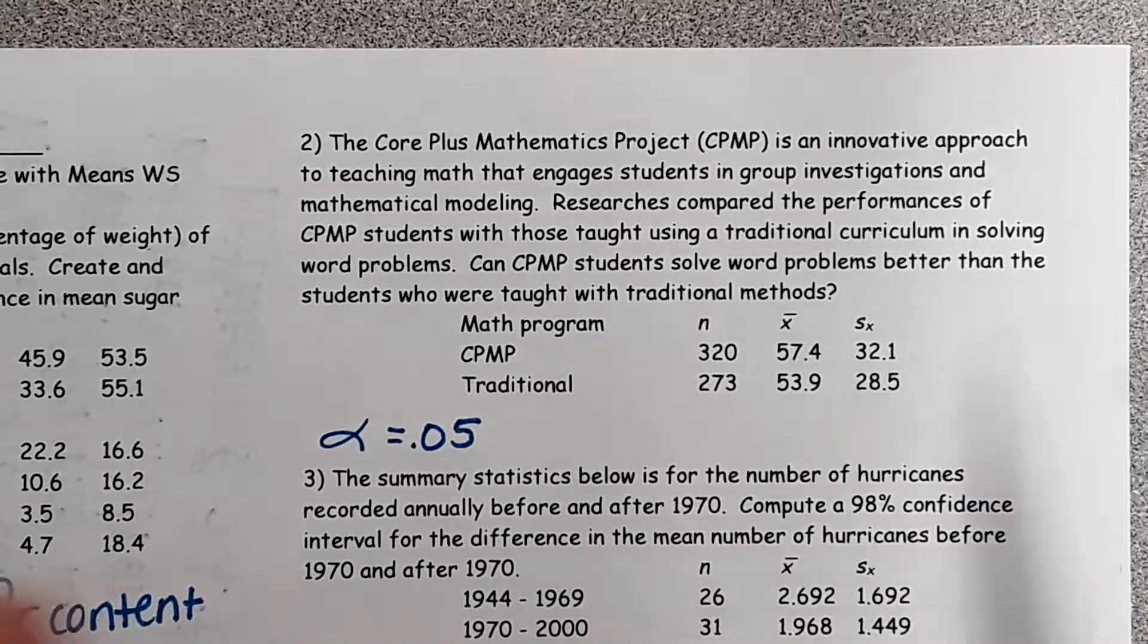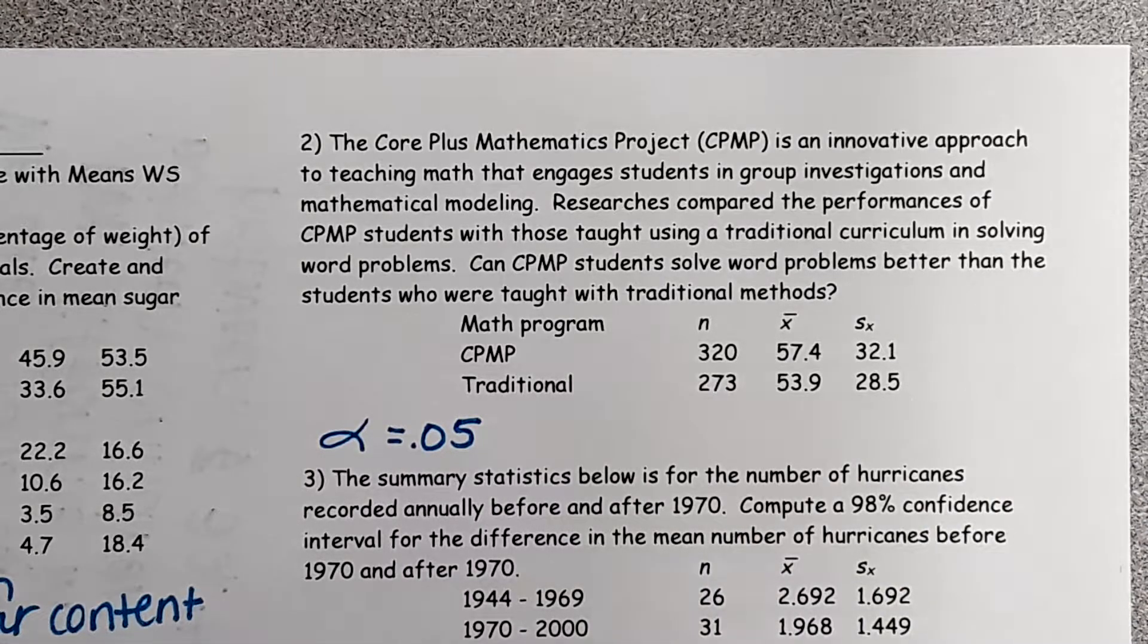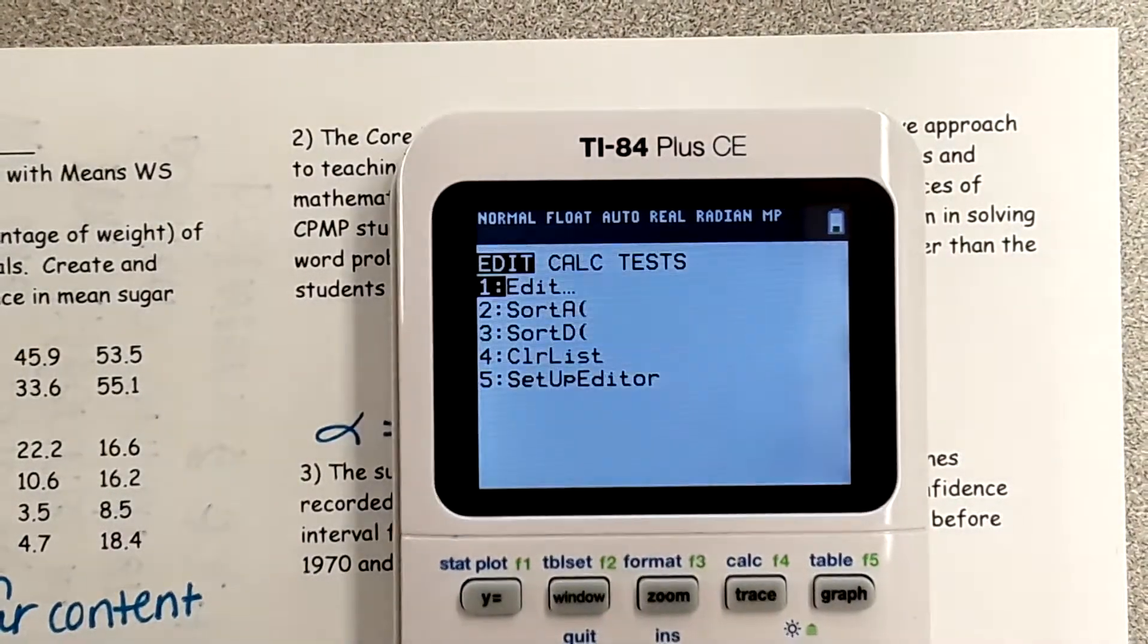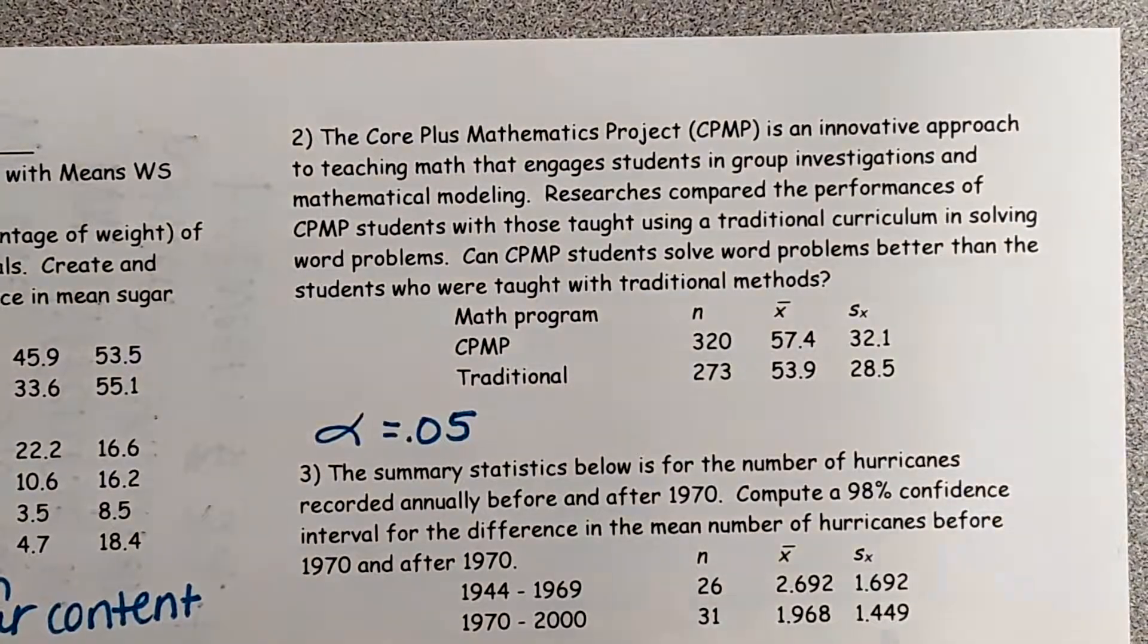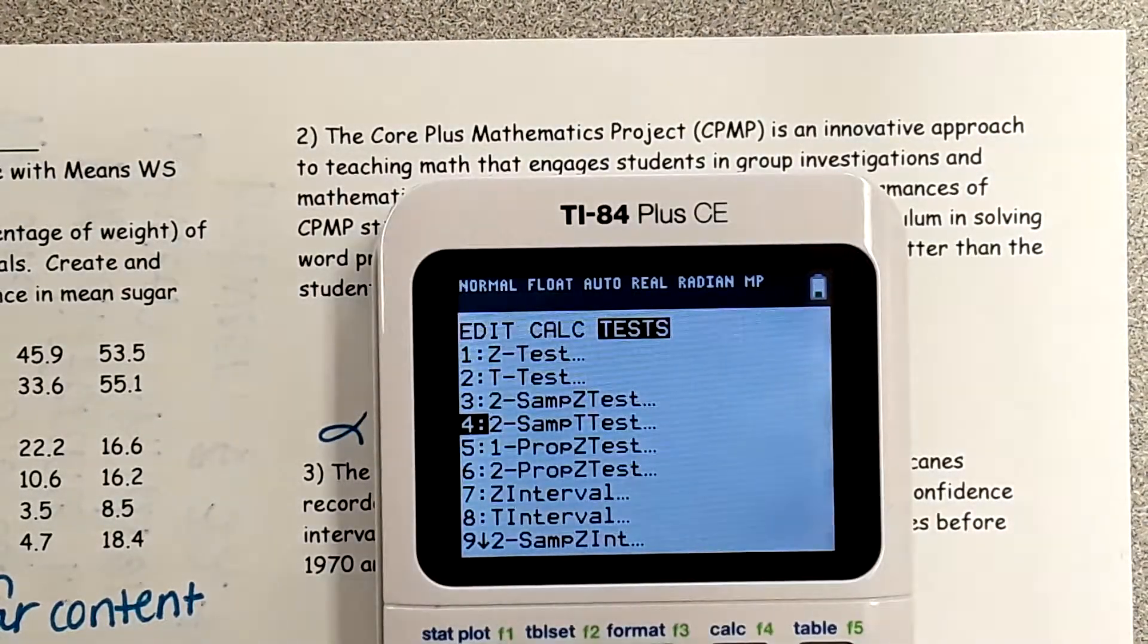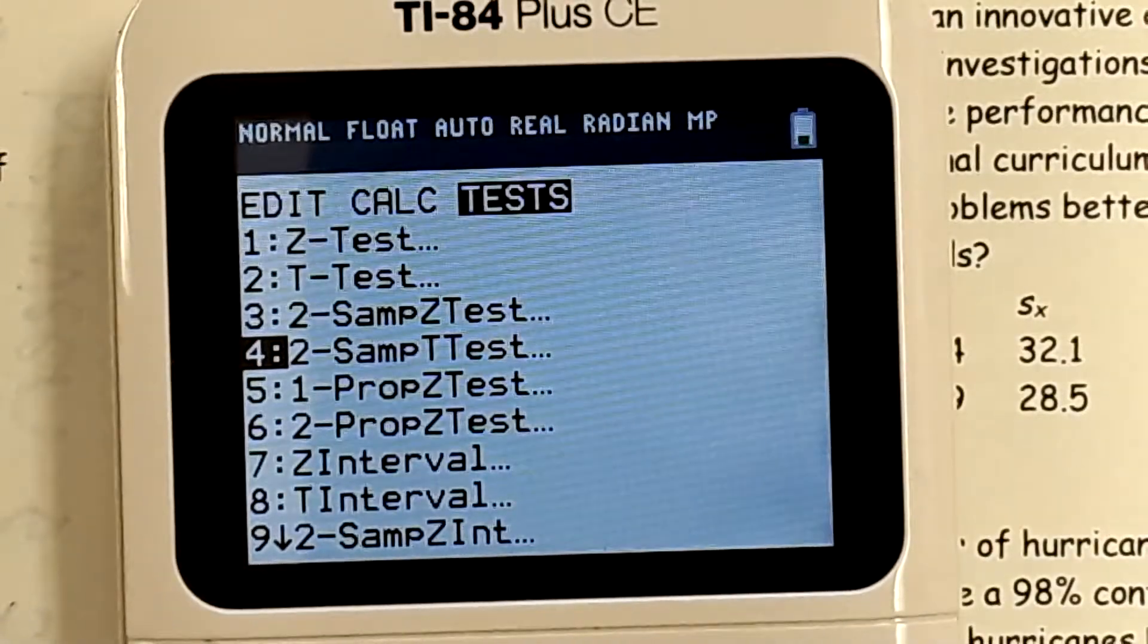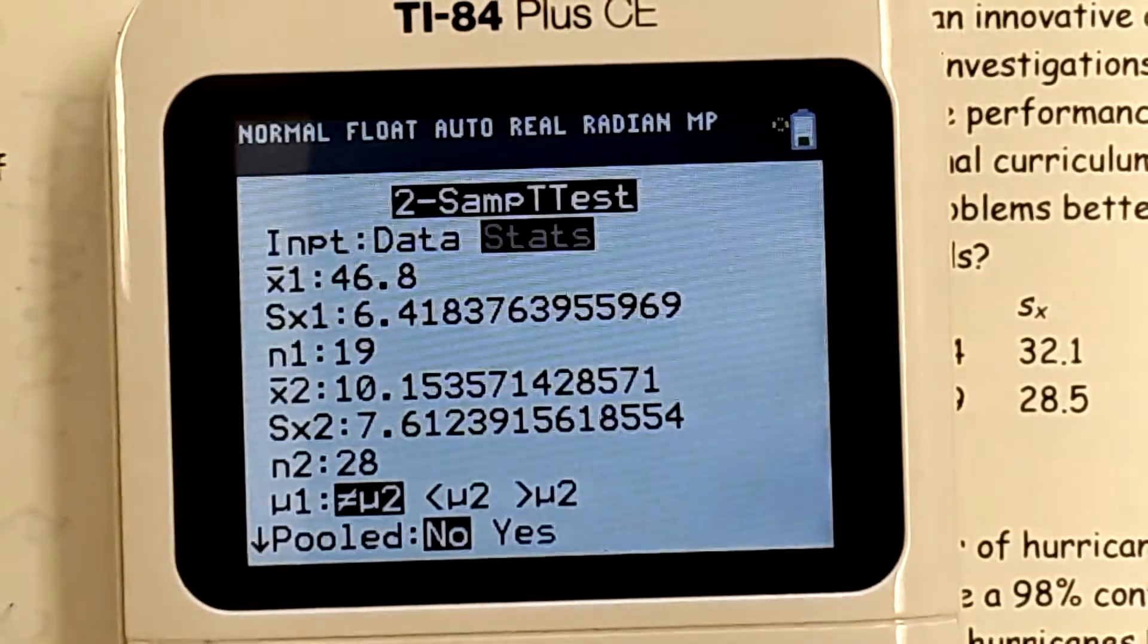Now we just need that, and now in our calculators we're going to do a test. So go to stat, over to test, and this is a two-sample t-test. How you know it's a t-test is because they gave you S of X and not sigma. They gave me stats, they did not give me data.